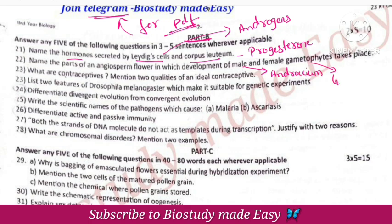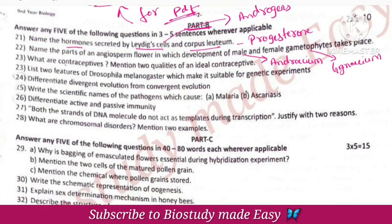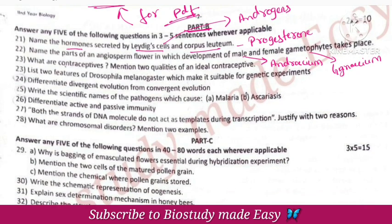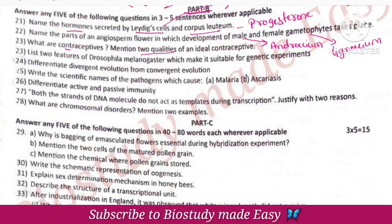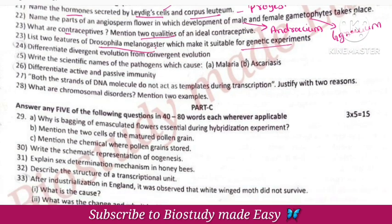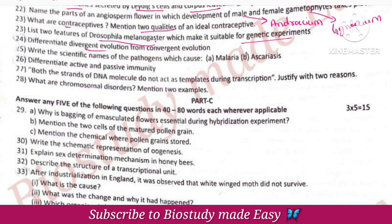What are contraceptives? Two qualities of ideal contraceptives — available in the reproductive health chapter playlist. List two features of Drosophila melanogaster that make it suitable for genetic experiments. Difference between divergent and convergent evolution.